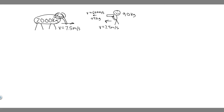In this problem, we're told to calculate the momentum of a 2,000 kg elephant charging a hunter at a speed of 7.5 meters per second. Compare the elephant's momentum with the momentum of a 0.04 kg tranquilizer dart fired at a speed of 600 meters per second. What is the momentum of a 90 kg hunter running at 7.4 meters per second after missing the elephant?